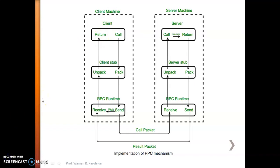In summary, RPC involves five elements: the client initiates the RPC; the client stub packs and unpacks messages and communicates with the RPC runtime; the RPC runtime handles transmission, retransmission, acknowledgement, routing, and encryption, sending the message to the server-side RPC runtime; the server stub unpacks the request and forwards it to the server; and the server executes the required procedure and returns the response back through the server stub to the client side.